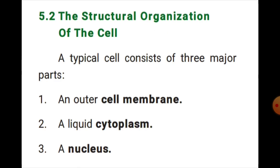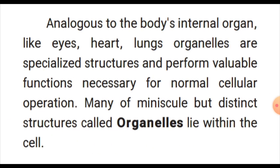The structural organization of the cell: a typical cell consists of three major parts — the outer cell membrane, the liquid cytoplasm, and the nucleus. Organelles are analogous to the body's internal organs like eyes, heart, and lungs. Organelles are specialized structures that perform valuable functions necessary for normal cellular operations.